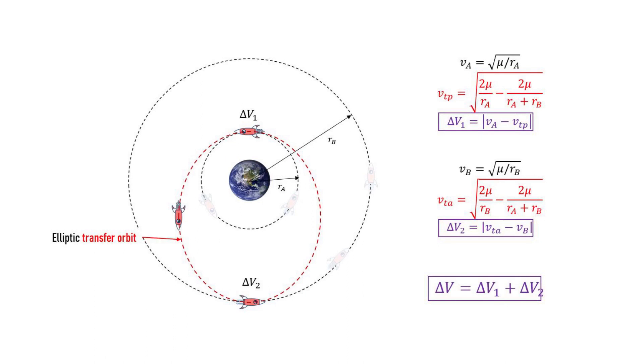The total change of velocity needed for the whole maneuver is delta v1 plus delta v2. And this maneuver between two circular orbits here is called the Hohmann transfer.